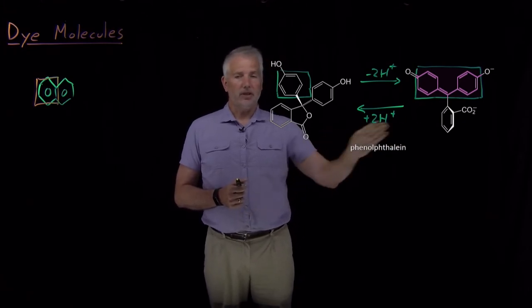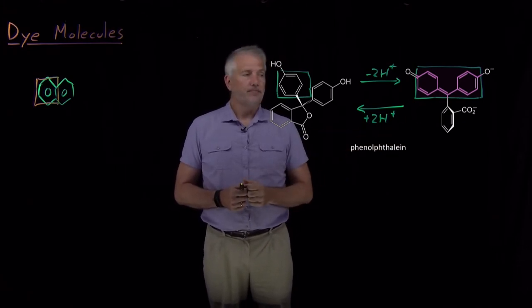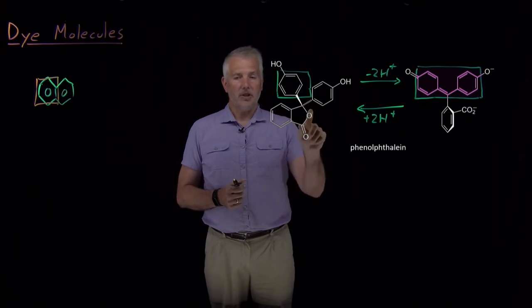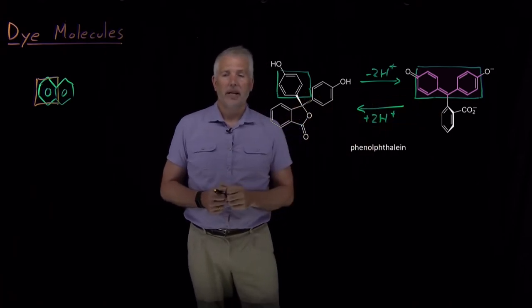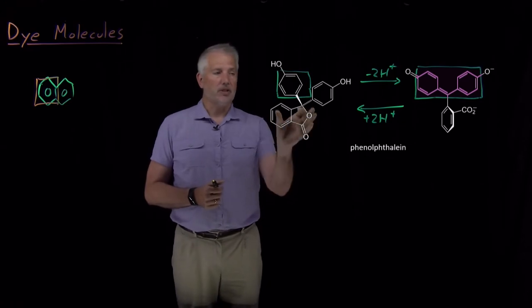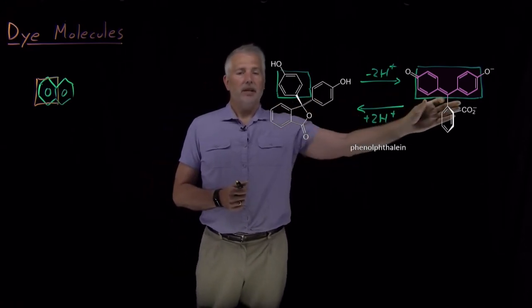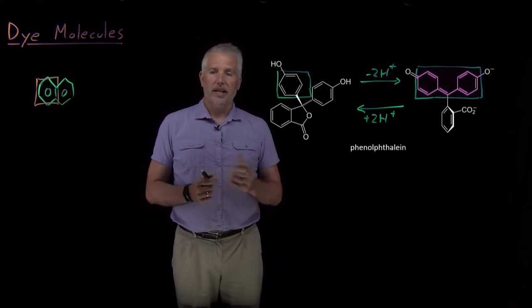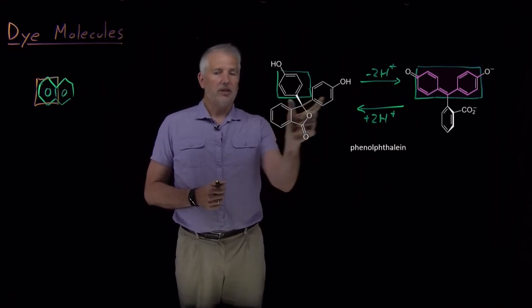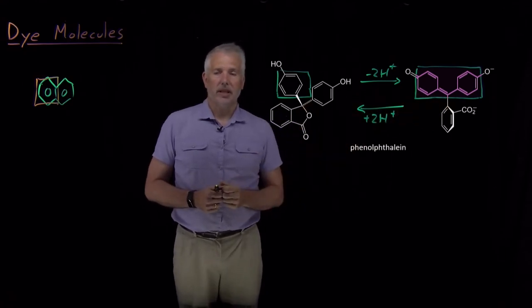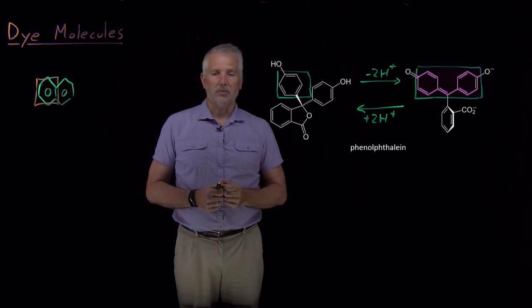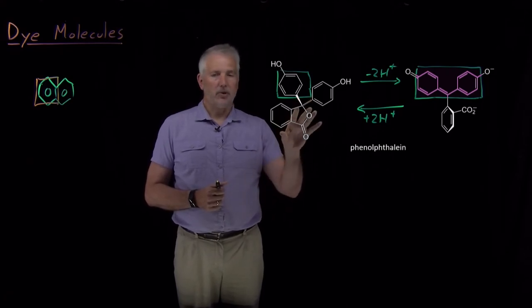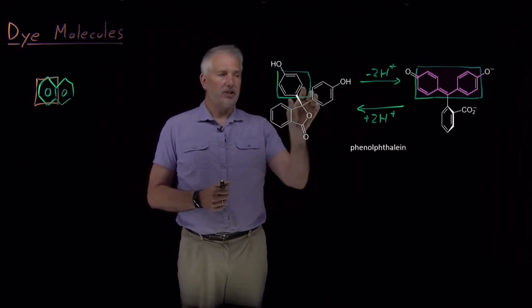The reason phenolphthalein is such a good acid-base indicator is because it undergoes a color change when it changes from its acidic to its basic form. The reason for that is essentially because the size of the box that the conjugated electrons are confined to changes. As we've seen, changing the box size changes the energy levels and the wavelength of light that gets absorbed. Here's a great example of how a chemical reaction can change the way a molecule behaves as a particle in a box.